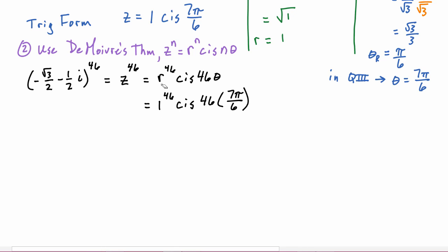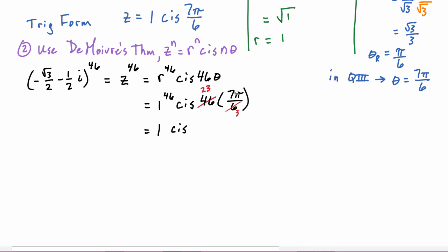One to the 46th is simply one. For the angle, 46 and 6 share a common factor of two, so 46 becomes 23 and 6 becomes 3. So we get cis 23 times seven pi over three, which is cis 161π over three. Now we need to find the coterminal angle between zero and two pi equivalent to 161π over three.